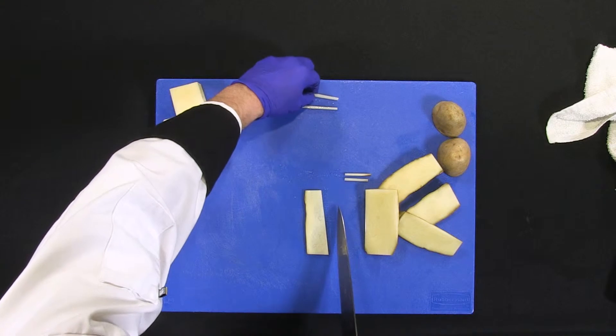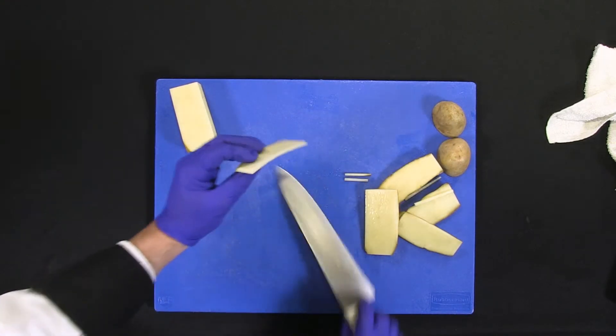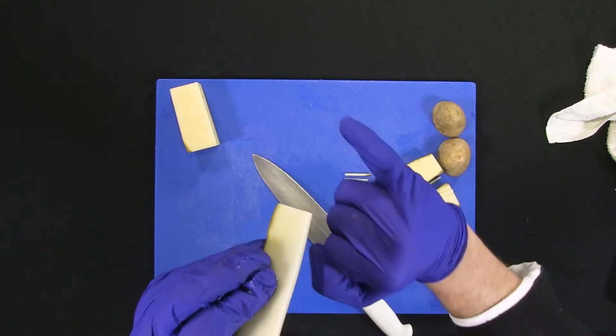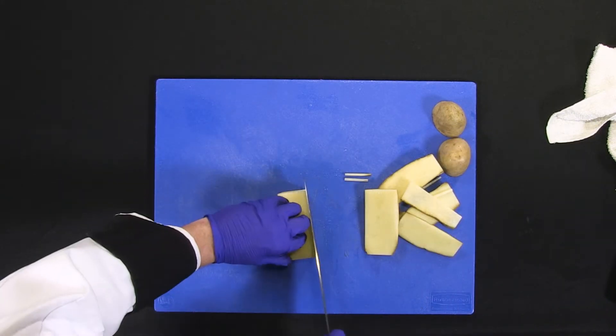Right there, you have your potato julienne. Just make sure you can hold your slice. Make sure that it's even all the way through. Let's do it one more time.